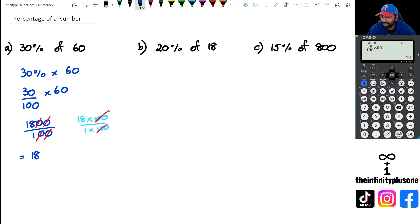So there we go, 30% of 60 is 18. If we want to do 20% of 18, I'm just gonna go 20 out of 100 because that's what 20% is, and multiply by 18. When I do this I'm actually gonna get 18 over 5. Now this particular calculator you need to go shift equals to get the accurate answer which is 3.6. So 3.6 is what we want to get for B.